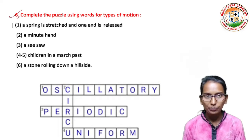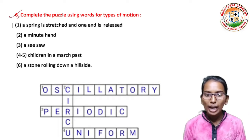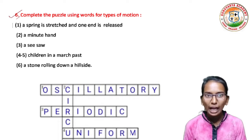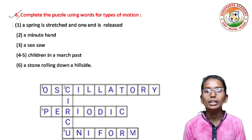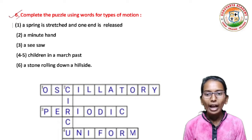Complete the puzzle using words for types of motion. First, a spring is stretched and one end is released. Second, a minute hand. Third, a seesaw. Fourth and fifth, children in a march past. And sixth, a stone rolling down a hillside.